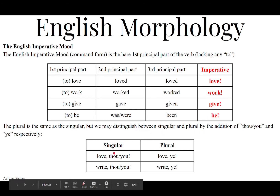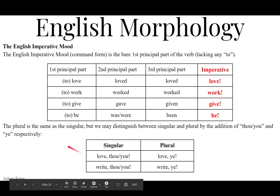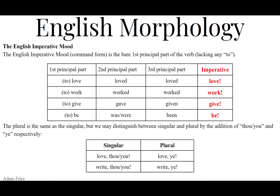We can distinguish singular from plural by adding a vocative direct address — we'll talk about that in a moment. Put a comma after the imperative, then add thou for singular or ye for plural. Notice how imperatives are always second person, because you're talking to a 'you,' either singular or plural. So: 'Love, thou' — singular. 'Love, ye' — plural. 'Write, thou' — singular. 'Write, ye' — plural. Hear ye, hear ye — you're telling more than one person to listen up.